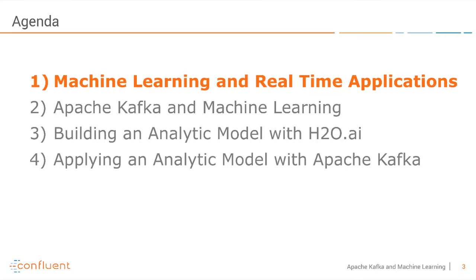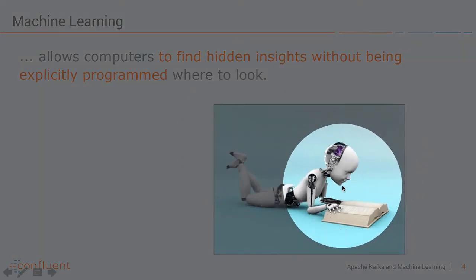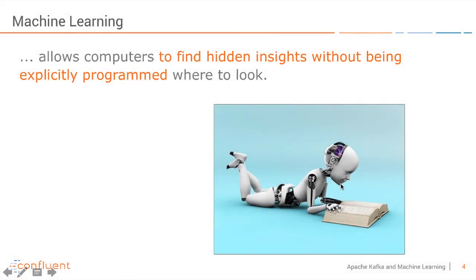Let's begin with machine learning in real-time applications as a little motivation. The definition first: machine learning allows computers to find insights without being explicitly programmed where to look. Here the computer is getting a lot of data inputs — much more than humans can process quickly — and that's why we need machine learning in case of big data and complex data structures with many different data inputs. The machines can easily learn that and build models which you can then apply for predictions. That's the main reason behind machine learning and its subcomponent deep learning.